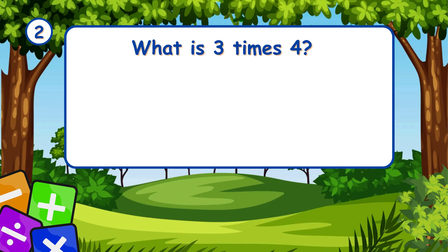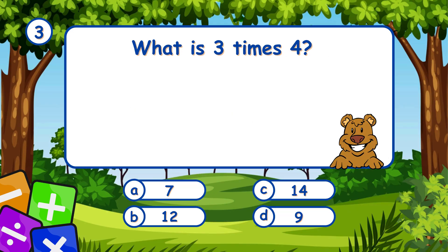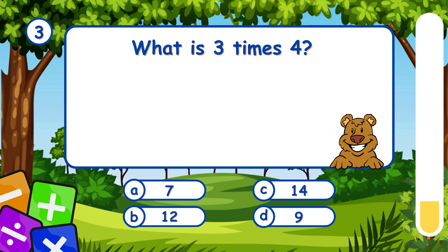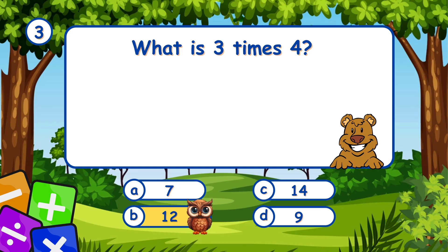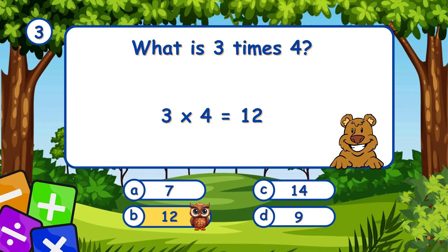What is 3 times 4? It's B, 12. 3 times 4 equals 12.